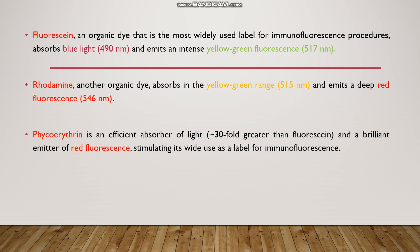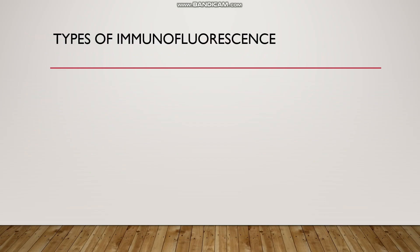Phycoerythrin is an efficient absorber of light, approximately 30-fold greater than other fluorescent compounds, and a brilliant emitter of red fluorescence, which has stimulated its wide use as a label for immunofluorescence.